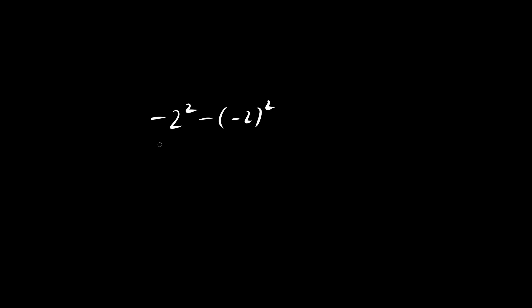For this problem, we recognize two terms. Let's evaluate this term first. We have negative 4, we do exponents first. And now we have this second term. This negative sign we'll just leave alone, and we should do the exponents first.